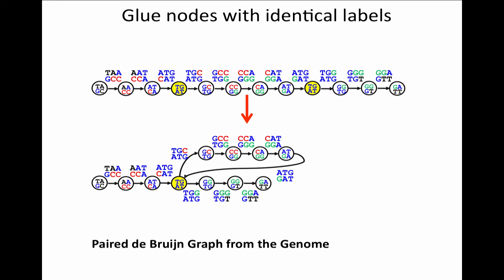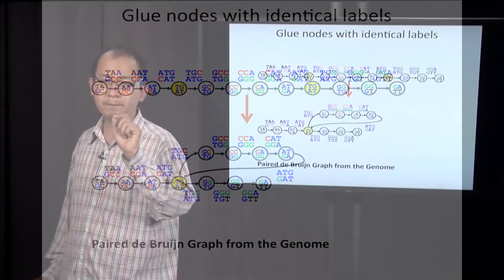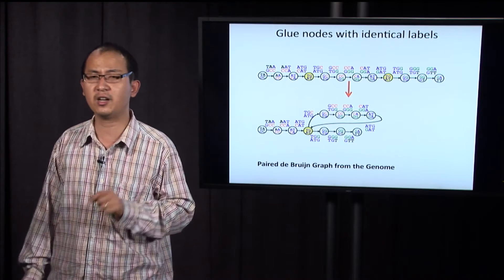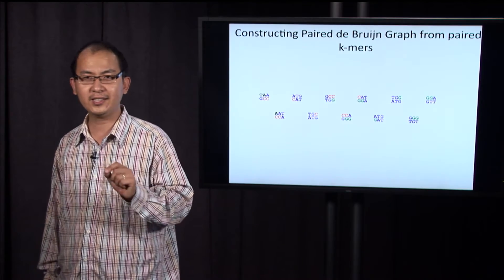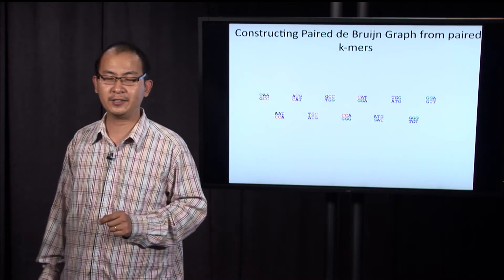Now, you may guess that the next question I'm going to ask is, can you construct the paired de Bruijn graph not from the genome, but from the paired k-mer compositions of the genome? Well, the answer, let's see how we solve this problem.